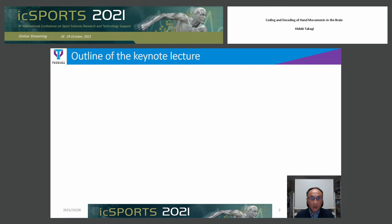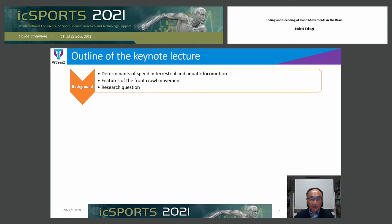The following is an outline of today's lecture. First of all, as a background of the research, I will explain the determinants of the movement speed in terrestrial and aquatic locomotion. Next, I will talk about the features of the front crawl and present the research question of this lecture.